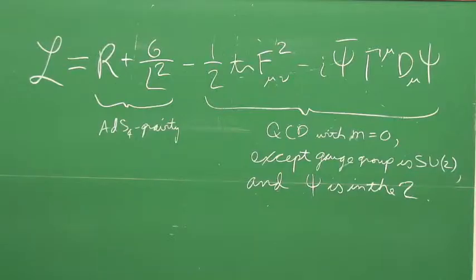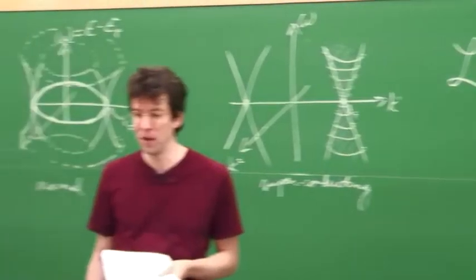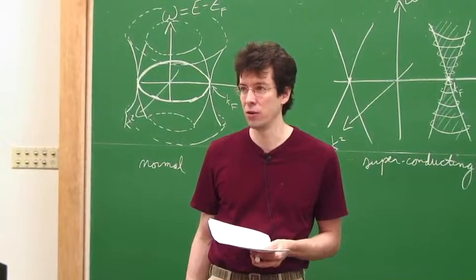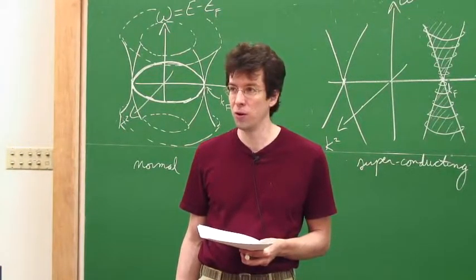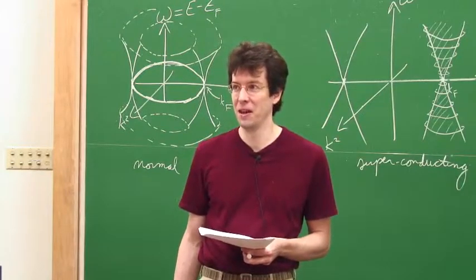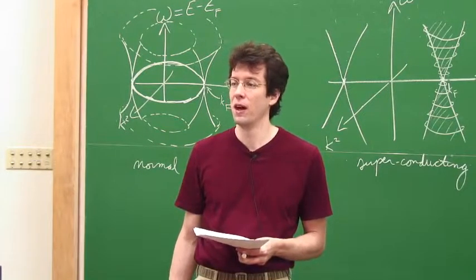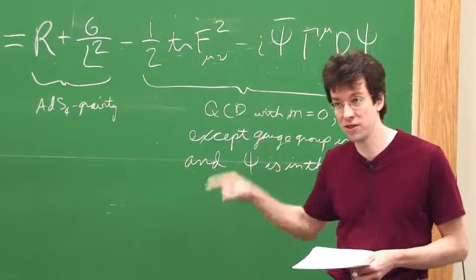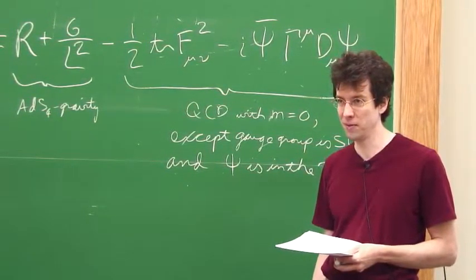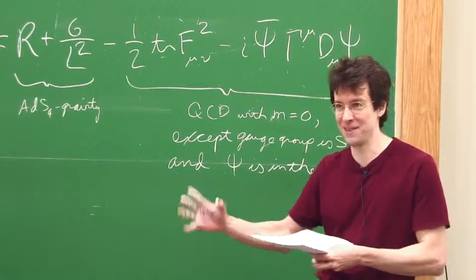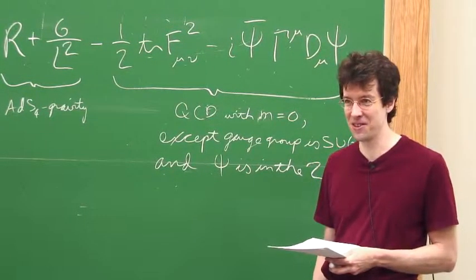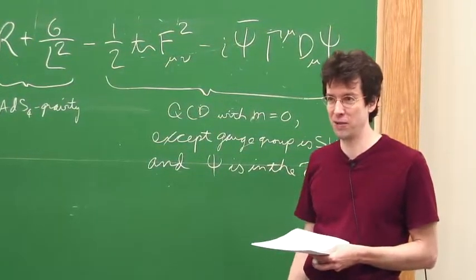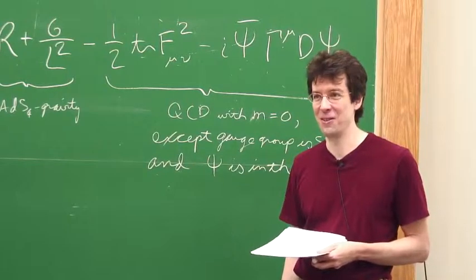A great question is: how do you know this Lagrangian is a consistent interpretation? The answer is: I don't. And that leads me to point out a major gap in the whole literature on fermions and holographic superconductors — as far as I know, nobody has ever started with a consistent truncation, gotten to the fermion action, and then taken that fermion action and calculated a two-point function. That's a little horrifying. Many papers have been written, not just by me but by others, on fermion response in holographic superconductors without ever looking at the supergravity Lagrangians.